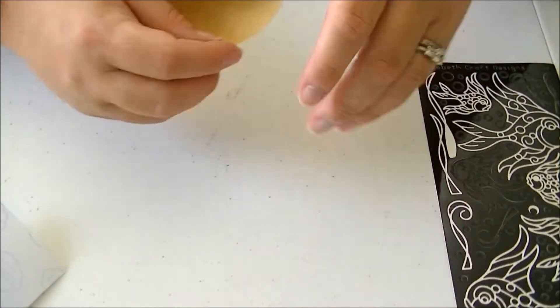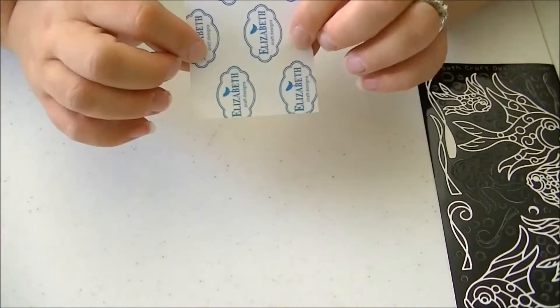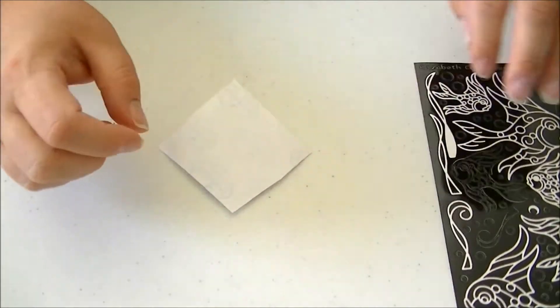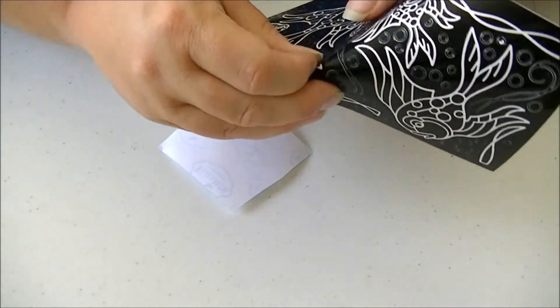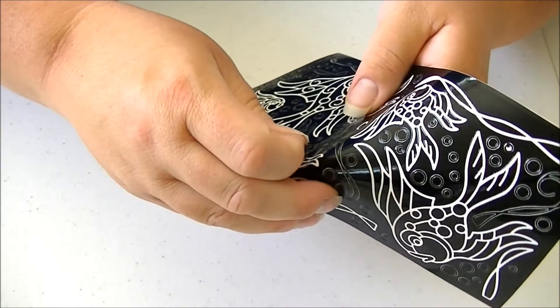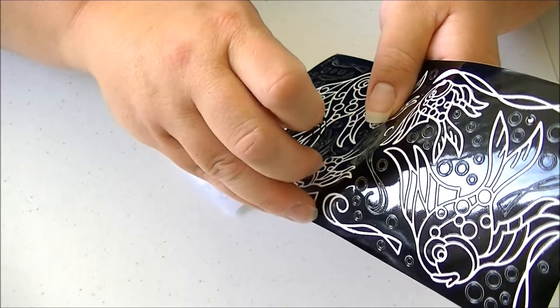We're going to set that out of the way and use this little tear-off sheet that came with our adhesive. We're going to carefully peel off our sticker. See, it's just a thin little outline.